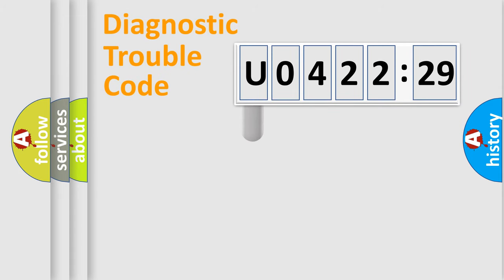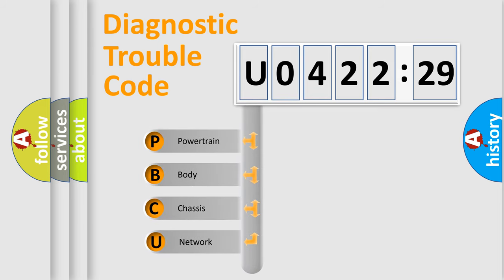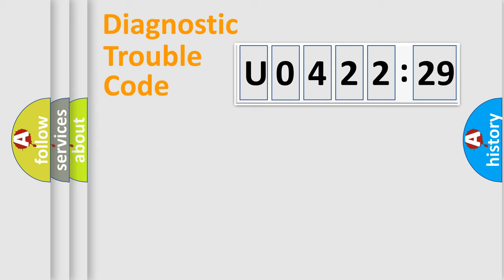First, let's look at the history of diagnostic fault code composition according to the OBD2 protocol, which is unified for all automakers since 2000. We divide the electric system of automobile into four basic units: Powertrain, Body, Chassis, and Network.